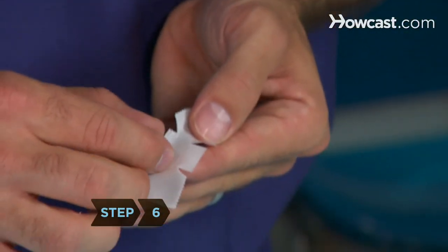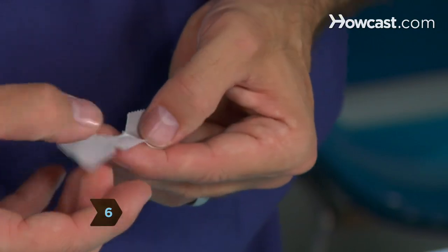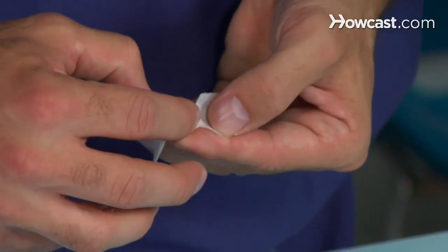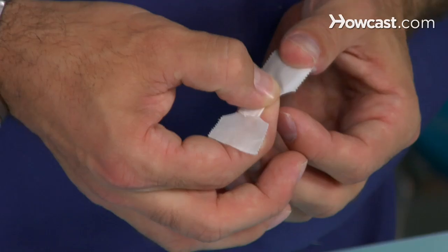Step 6: Fold the center flaps across the middle of the tape, sticky side in, so they overlap. This will prevent the adhesive from sitting directly on top of the wound.